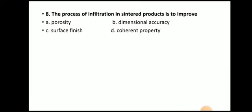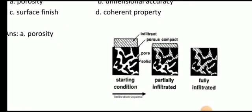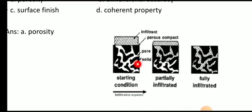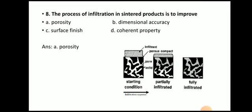Next question: The process of infiltration in sintered product is to improve? The answer is porosity. So the process of infiltration in sintered product is to improve the porosity. Here you can see the infiltration process — this is the starting condition, this is partially infiltrated, and this is fully infiltrated. We want to improve the porosity of that product, which is also one of the benefits of powder metallurgy.